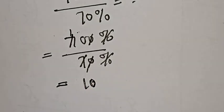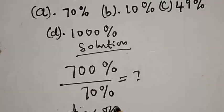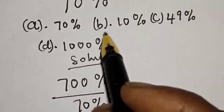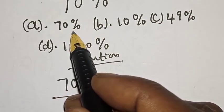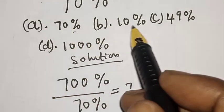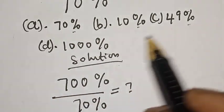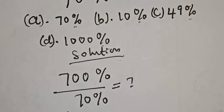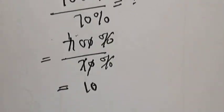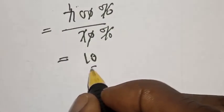Is that our final answer? Let's see the options. In the options, we have a percentage here, a percentage here, a percentage here, and a percentage here. So this is not our final answer.